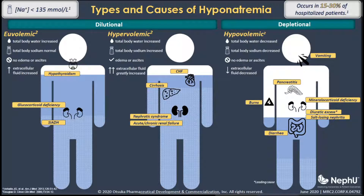When we're discussing hyponatremia, we're talking about a serum sodium level of less than 135 millimoles per liter. When we have a low sodium state, a common first step in classifying hyponatremia is to look at plasma tonicity, where we have three classes of hyponatremia.